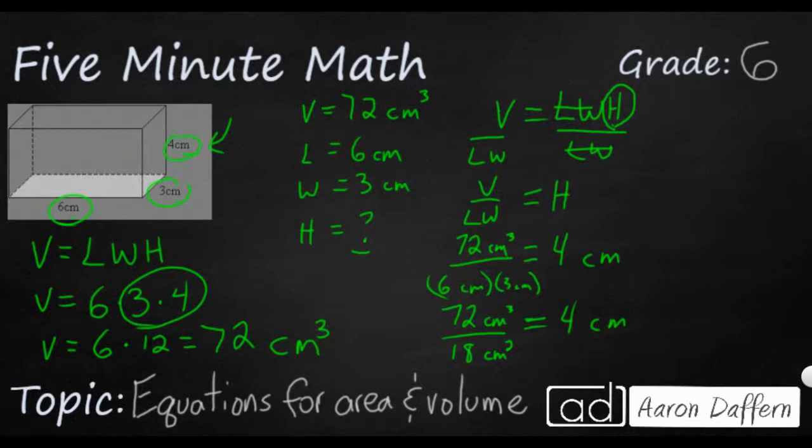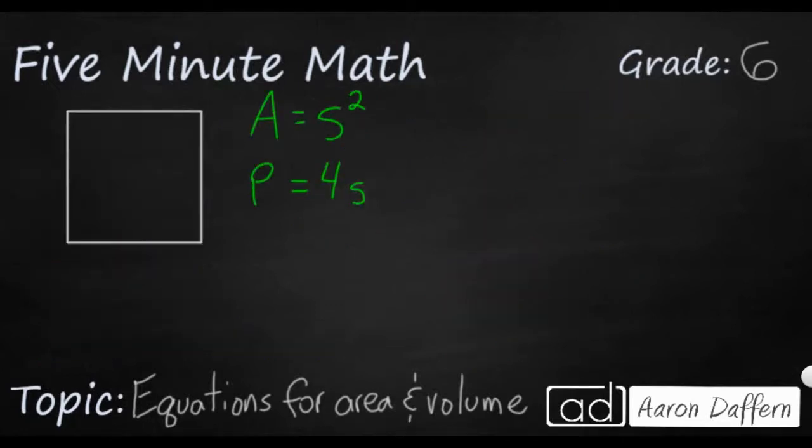Let's see what that looks like with a square. So we have a basic square here. The only two equations we know what to do with are area equals side squared and perimeter equals four S. But what if they gave you both the area and the perimeter? So let's say the area in this case is going to equal 25 and the perimeter is going to equal 20.